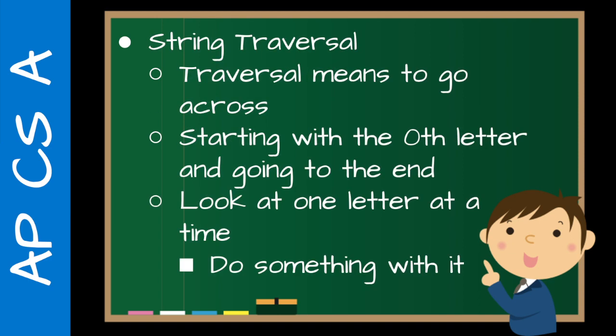Traversal — string traversal in this case — traversal means to go across: starting at one end and going to the other end. Typically we're starting at the beginning, so that would be index zero, and going to the end, which is index length minus one as the final index. You'll see I have the expression starting with the zeroth letter and going to the end — not the first letter, the zeroth letter. It's a little confusing because in our heads we think the first letter is the first letter, but that's index zero.